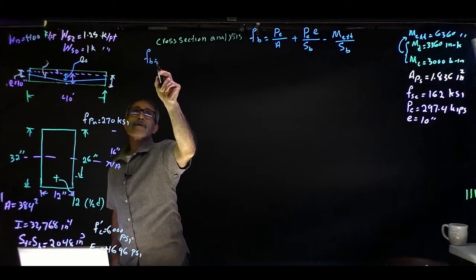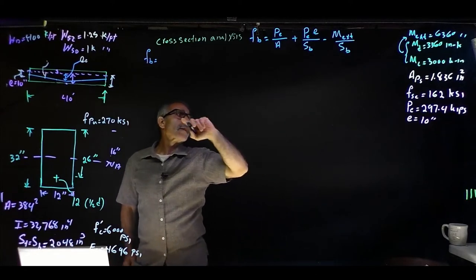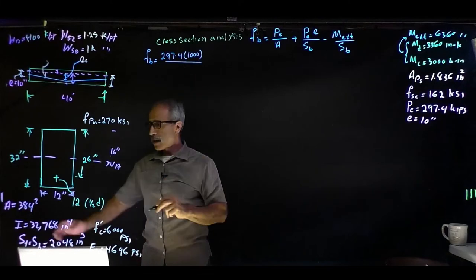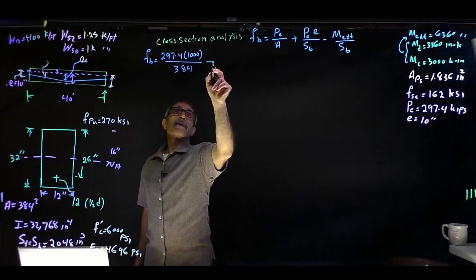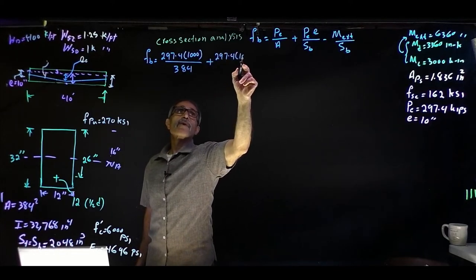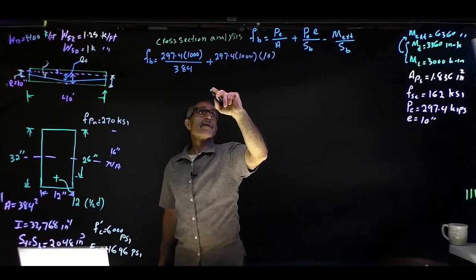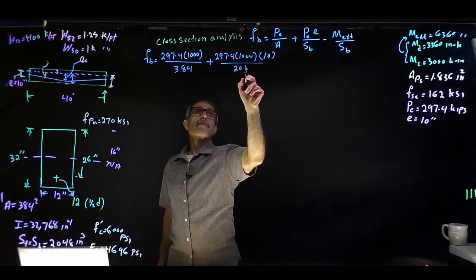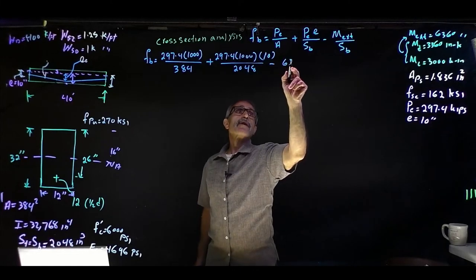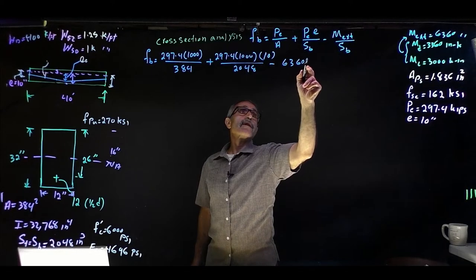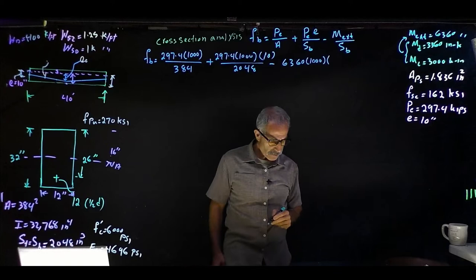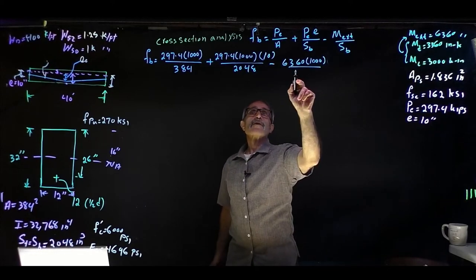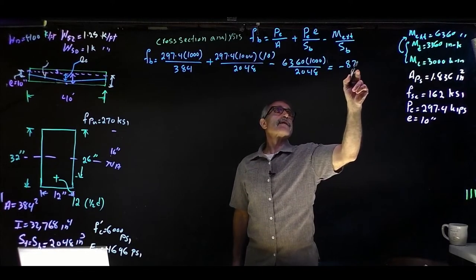fb = (PE × 1,000)/Ag + (PE × 1,000 × e)/Sb − M_total/Sb. With PE = 297.4 kips, Ag = 384 in², e = 10 in, Sb = 2,048 in³, and M_total = 6,360 kip-inches: fb = −879 psi.